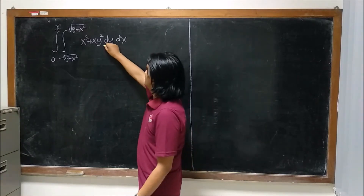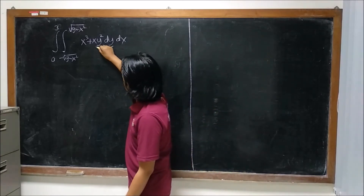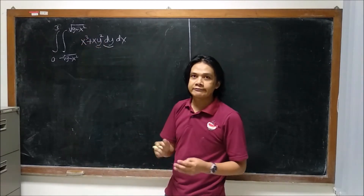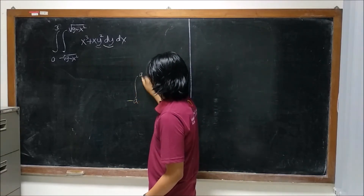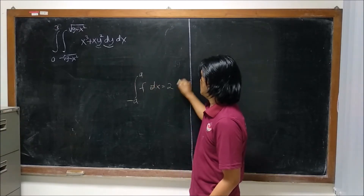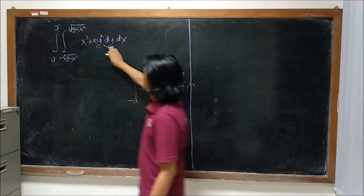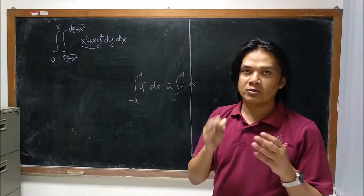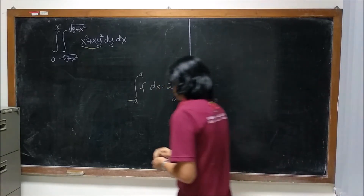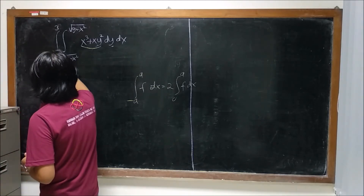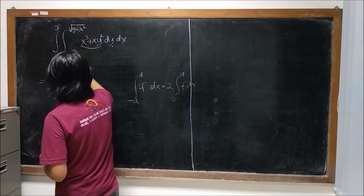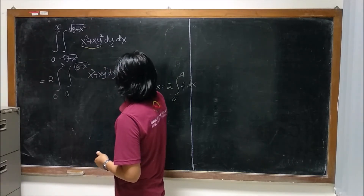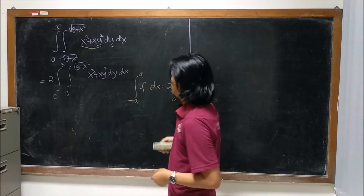So first of all, when we compute the integral with respect to dy, notice that y squared and x cubed are considered as constants, so x cubed and x y squared are even functions. Remember that if we have a given even function, then this becomes twice from 0 to a of f dx. Since x cubed plus x y squared is even with respect to y, this integral can be rewritten as twice from 0 to 3, integral from 0 to the square root of 9 minus x squared, of x cubed plus x y squared dy dx. That's the first step to simplifying the integral.